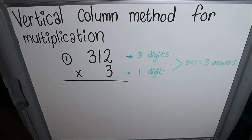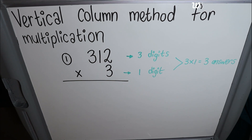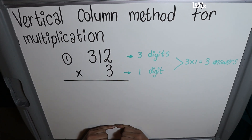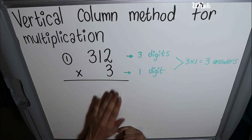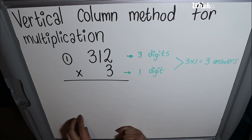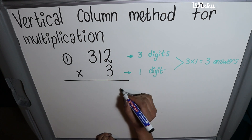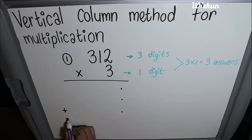Now we'll be looking at an example for the vertical column method of multiplication. The very first thing I want you to do is look at the amount of digits that you're multiplying. The first number is 312, which is a three-digit number, multiplied by 3, which is a one-digit number. When I multiply these two numbers it tells me how many answers I should have. So after I've multiplied I should have 3 times 1 which is 3 — I should have 3 answers that I will then add to give me my final answer. So let's make room for 3 answers: 1, 2, 3 answers that I will add at the end, and then I draw a line.